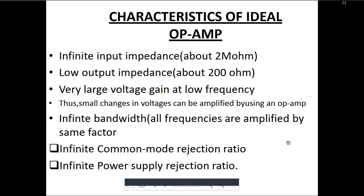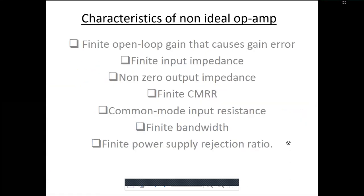The characteristics of the ideal op-amp include: infinite input impedance, low output impedance, very large voltage gain, ability to amplify small changes in voltage, and infinite bandwidth. In contrast, the non-ideal op-amp has: finite input impedance, non-zero output impedance, common-mode input resistance, finite bandwidth, and finite power supply rejection ratio.